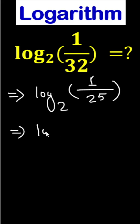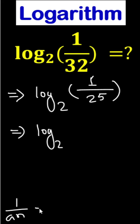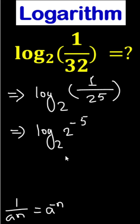Now, log base 2 of 1 by 2 to the power 5. We know 1 by a to the power n equals a to the power minus n, as per the negative exponent rule. So this one we can write as 2 to the power minus 5.